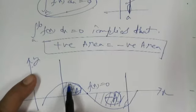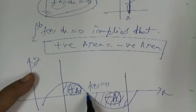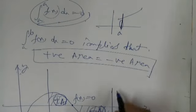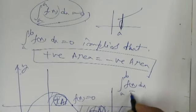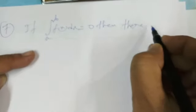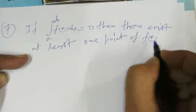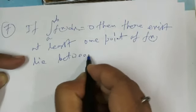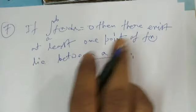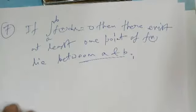The area being 0 means the integral function f(x) passes through 0. That is, integral from a to b of f(x) dx equals a minus a, which is 0. Concept number 7: if integral from a to b of f(x) dx is 0, then there exists at least one point of f(x) lying between a and b. This is a key point for short MCQ-type questions.